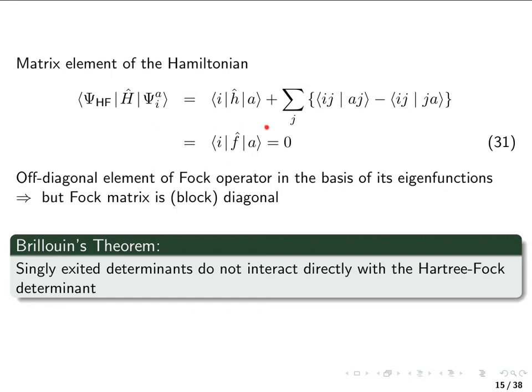Now if you look at that compared with previous expressions for the Fock matrix, we can see that this is just an element of the Fock matrix. This is what is called an off-diagonal element of the Fock matrix, where here we have an occupied orbital and a virtual orbital.